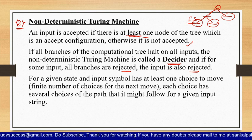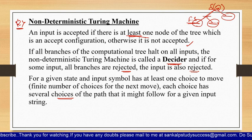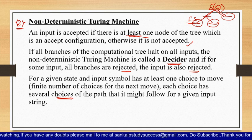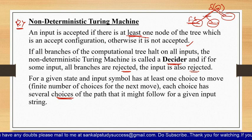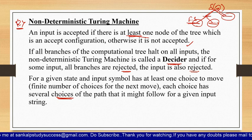For a given state, the input symbol has at least one choice to move, and each choice leads to several possible paths for a given input string. There is a general principle: if you are having several choices, it is non-deterministic — whether it is a Turing machine, a finite automaton (non-deterministic finite automaton), or a pushdown automaton (non-deterministic pushdown automaton). Here this is a Turing machine where you are having several transitions for the input string — that is the non-deterministic Turing machine.